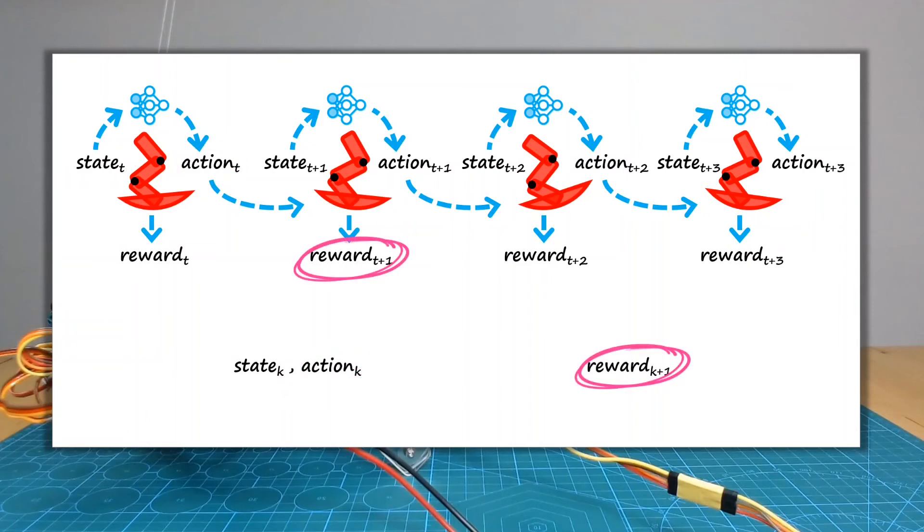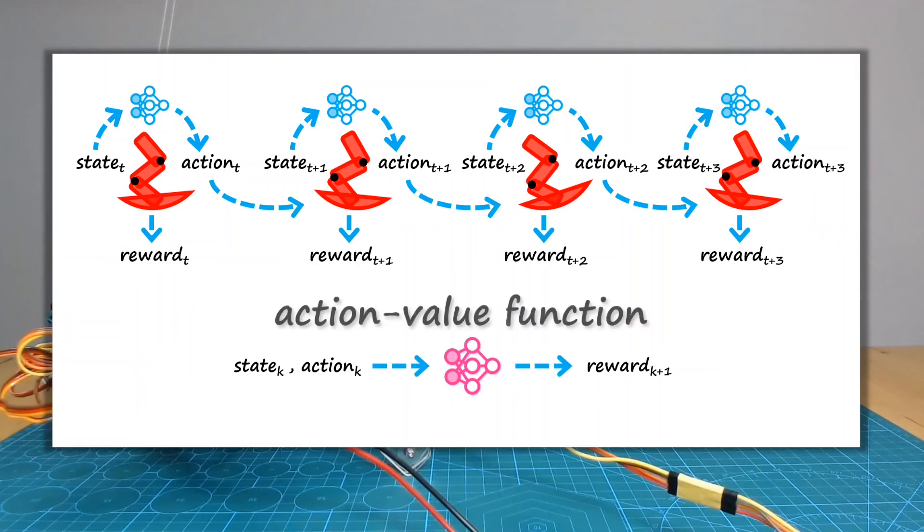So just like we previously trained a mapping from state to action, we can use our data set to train a mapping from this state plus action to a future reward. If we can learn this kind of a mapping function,